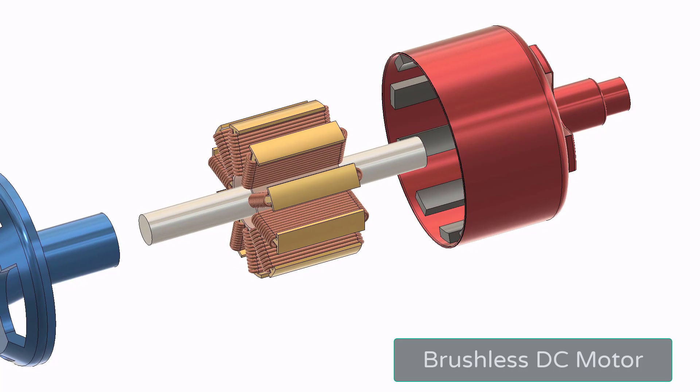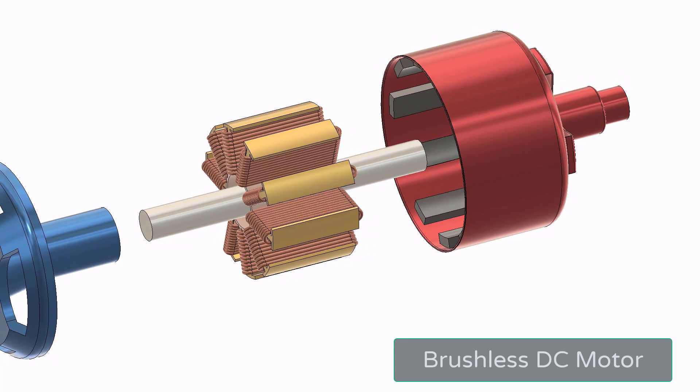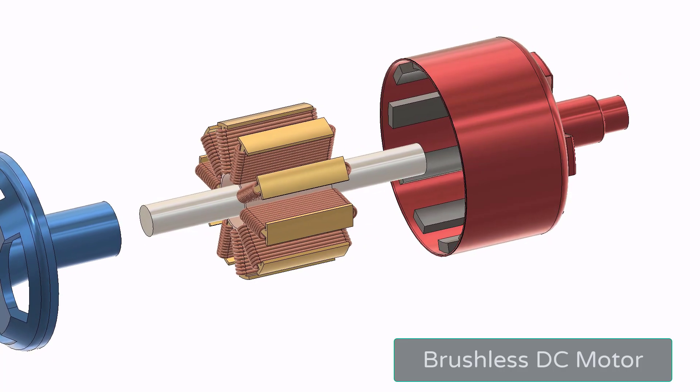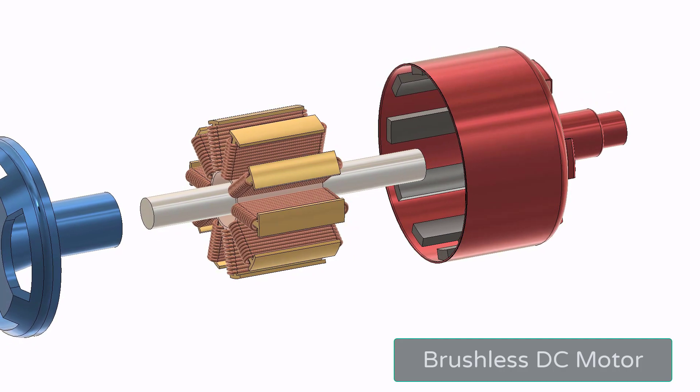Larger motors with higher KV ratings can generally produce more thrust. KV rating determines how fast the motor will spin for a given voltage, and higher KV motors tend to spin at higher RPM, which can generate more thrust when paired with appropriate propellers.